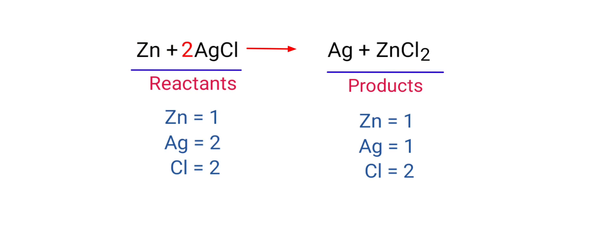The chlorine atoms are balanced. Now we need to balance the silver atoms. To do this, we need to put a coefficient of 2 in front of Ag.